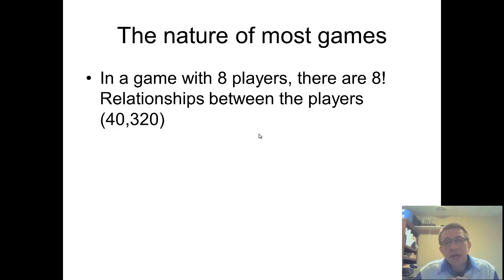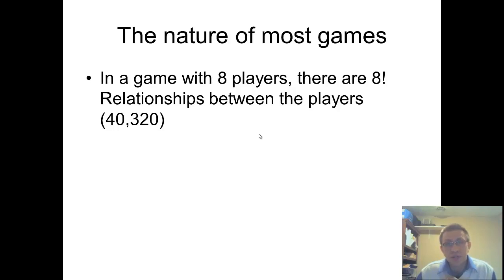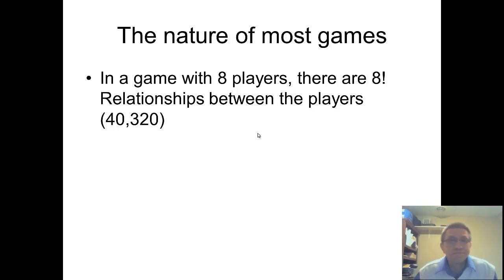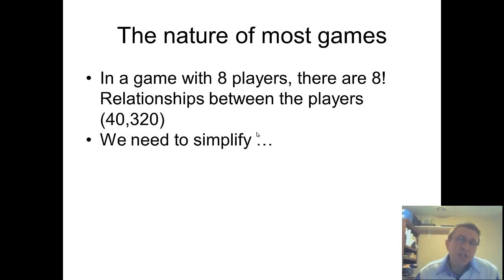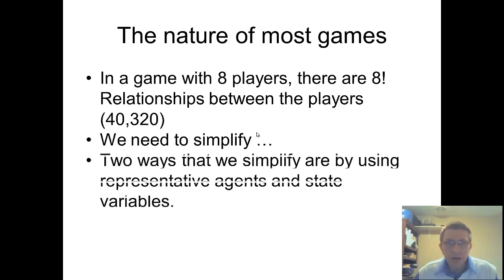If we had eight players in a game, there would be eight factorial potential relationships between the players, which works out to be 40,320. We can't do that. So in order to study an n-person game, we need to simplify.